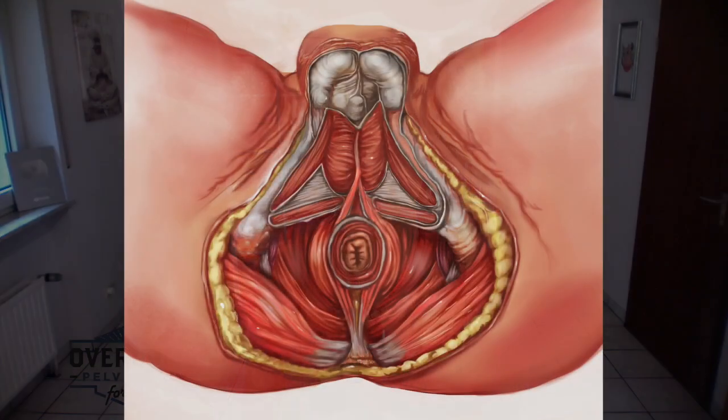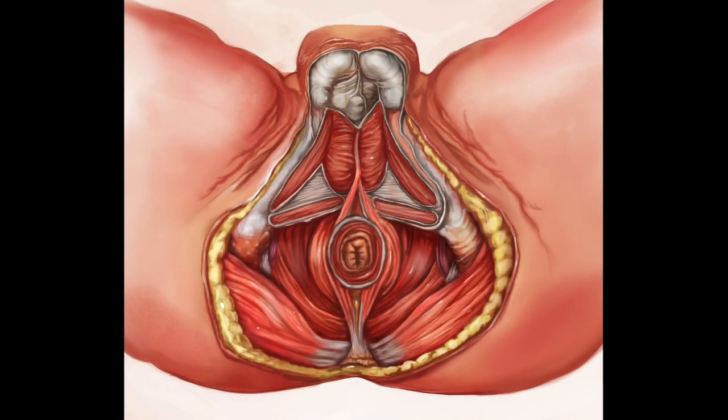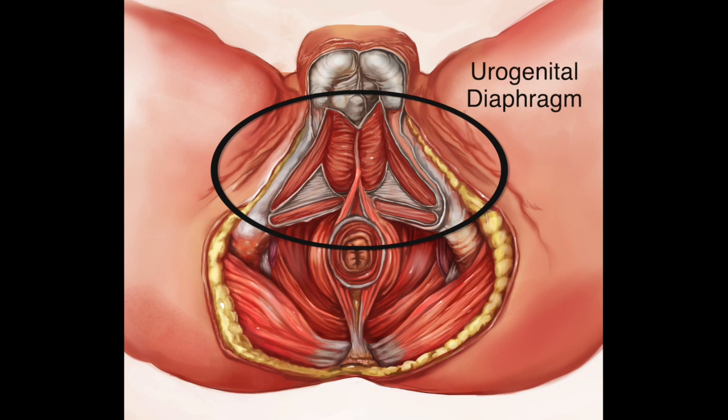Hello and welcome to Overcome Pelvic Floor 101. We're going to talk a little bit about anatomy today, specifically when it comes to the male pelvic floor. Let's start with the most superficial, or the most outside, layer of the pelvic floor, and that's going to be the urogenital diaphragm.